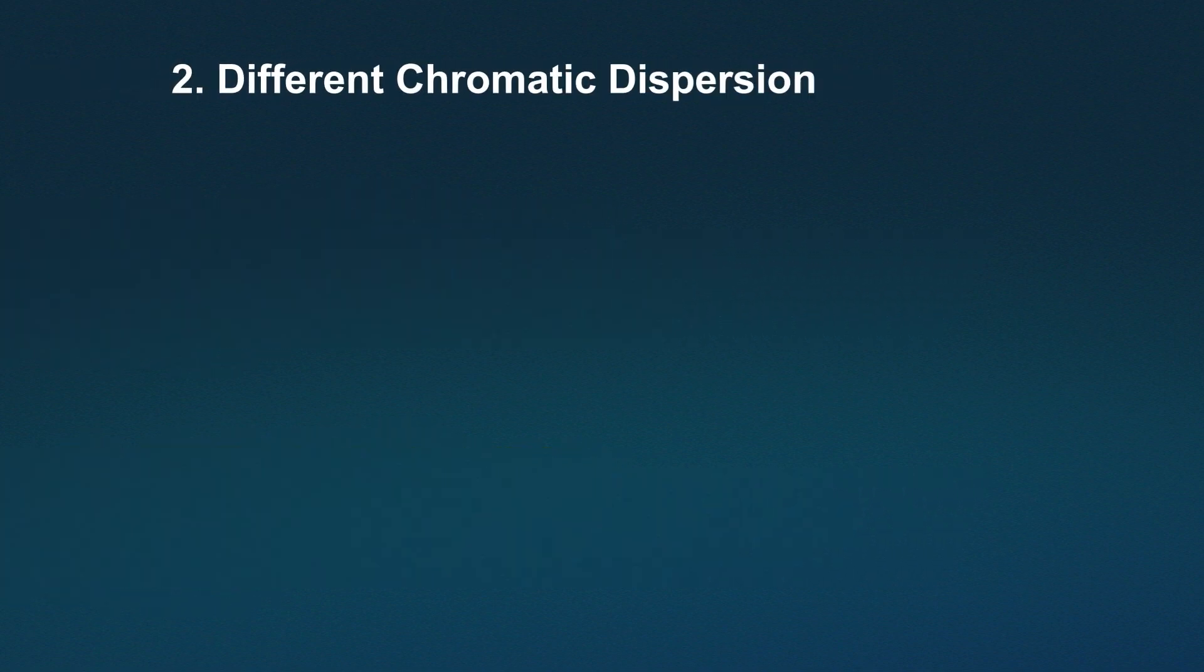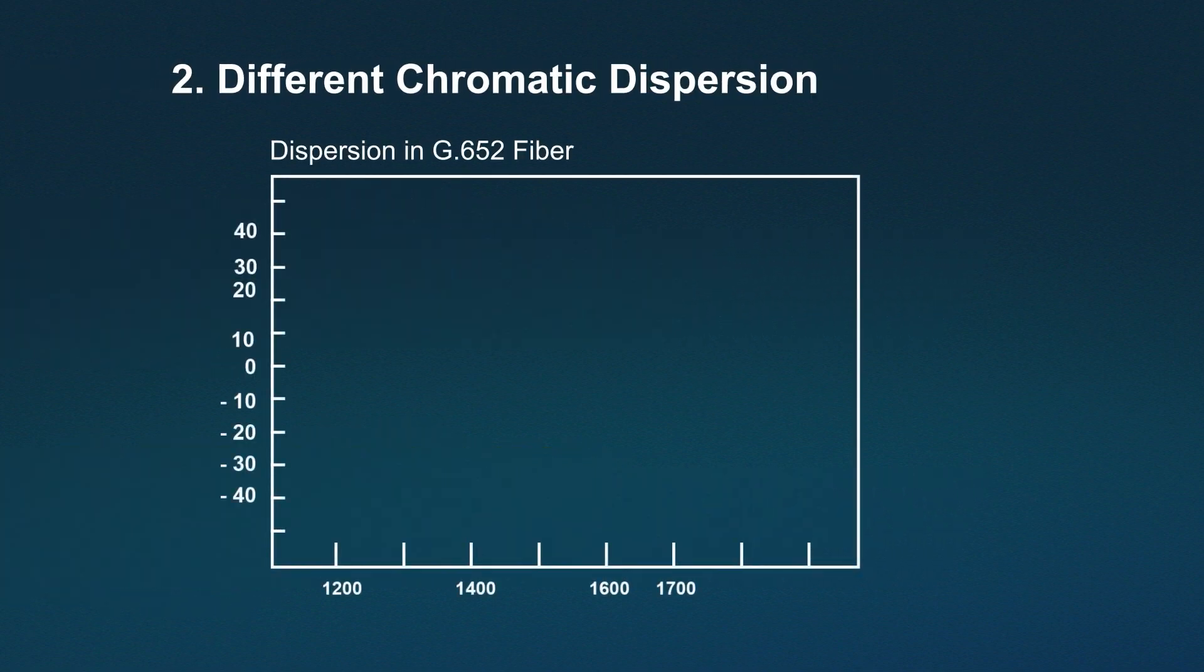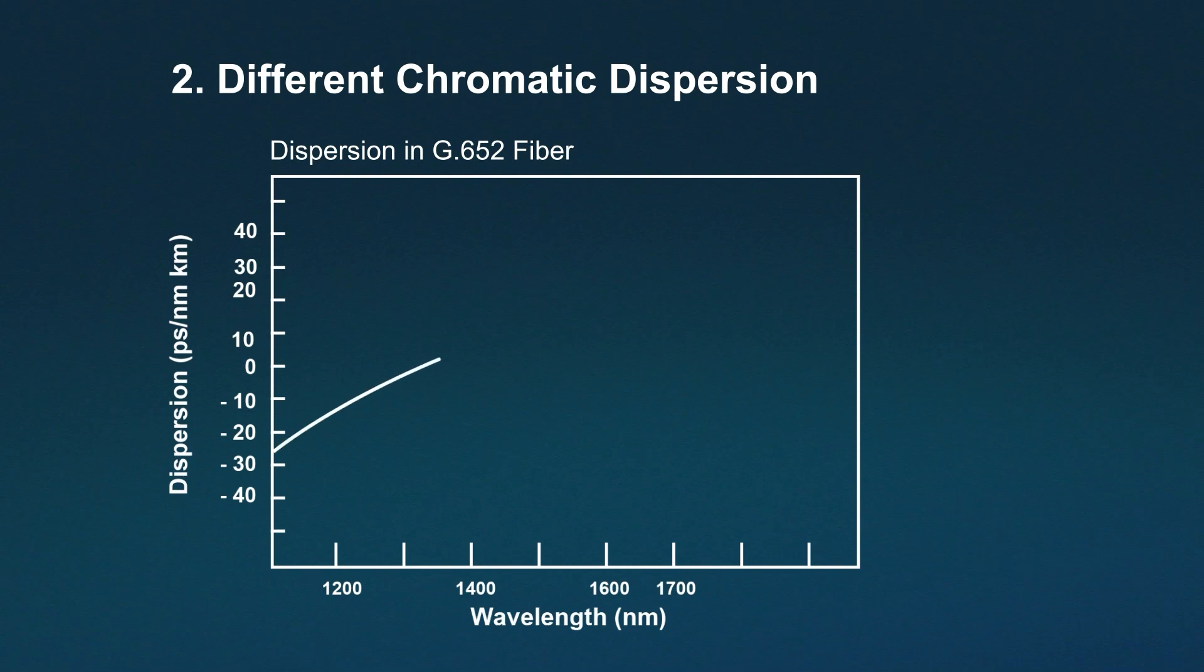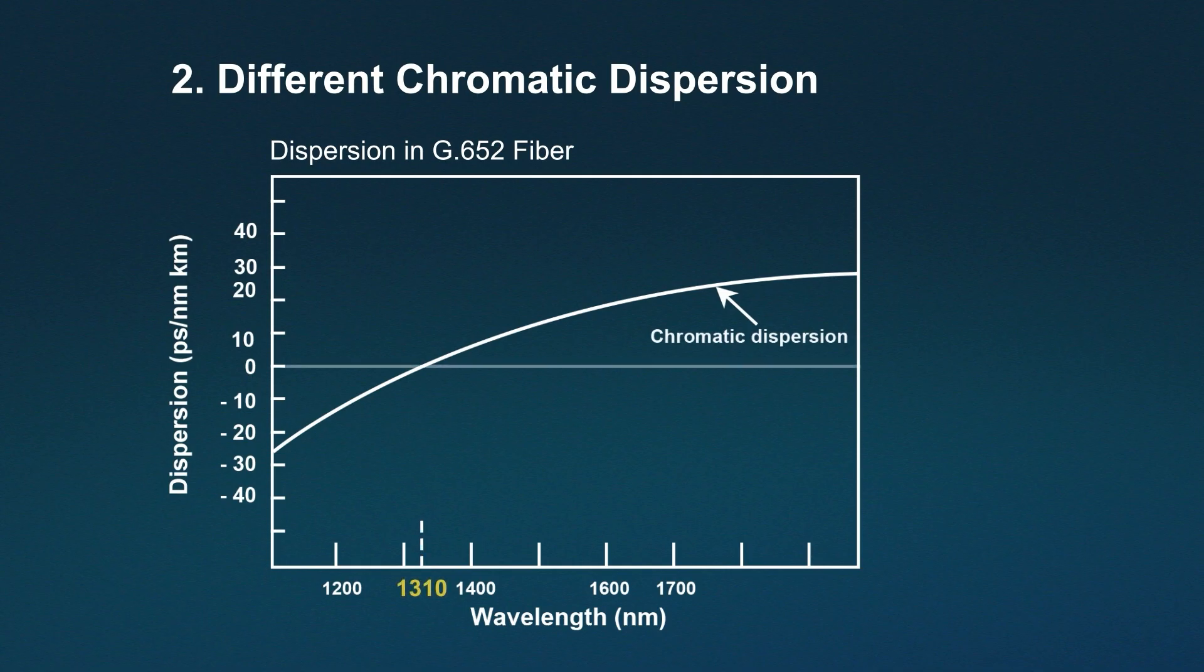Next, the chromatic dispersion is different. On G652 single-mode fiber, the dispersion coefficients of 1310 nanometer and 1550 nanometer optical modules exhibit substantial differences. 1310 nanometer modules have near-zero dispersion, meaning the signal won't suffer significant dispersion during transmission, reducing signal distortion and inter-symbol interference.